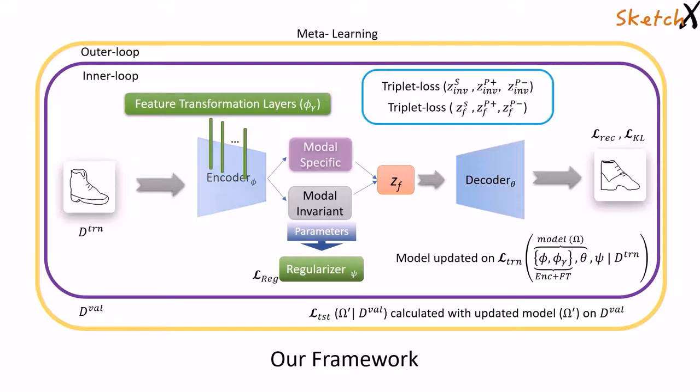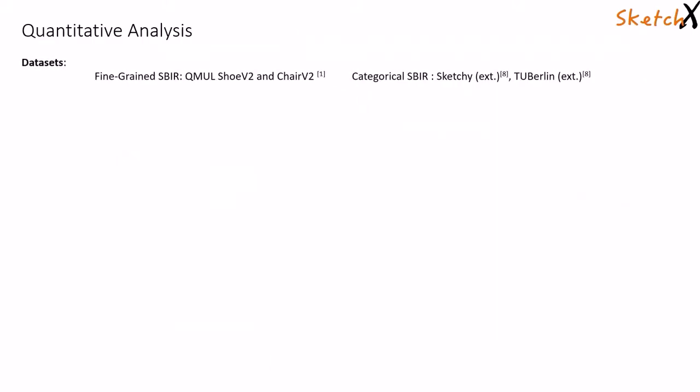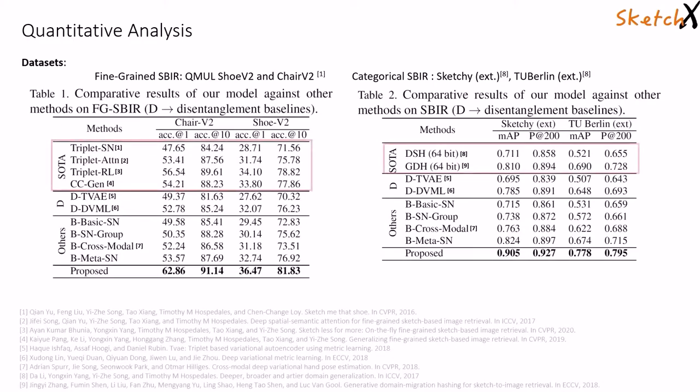After training, the encoder and the invariant part are used for inference. We evaluate our method on four datasets: Sketchy and TU-Berlin for categorical SBIR and QMUL ChairV2 and ShoeV2 for fine-grained sketch-based image retrieval.